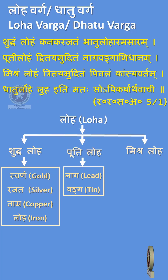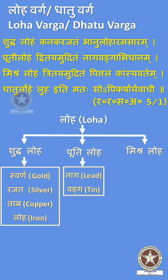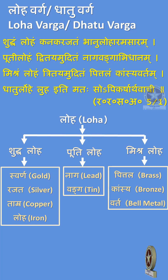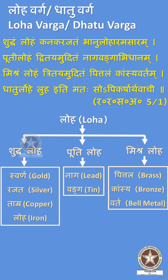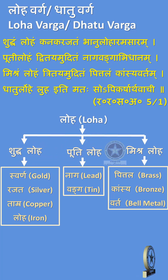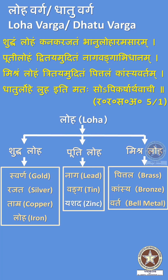Mishra Loha or Alloys includes three drugs: Pithala (Brass), Kansya (Bronze), and Vartaloha (Bell Metal). It was later, in the 16th century Bhav Prakashah and 17th century Ayurveda Prakashah, that Yashada (Zinc) was included under the Puthi Loha category.